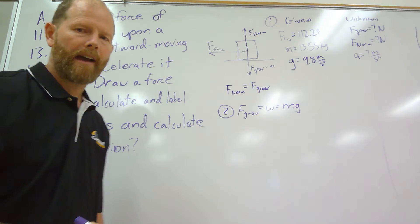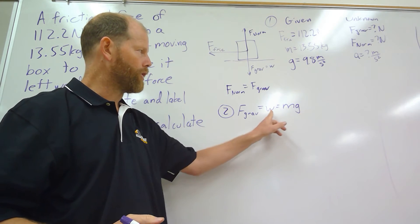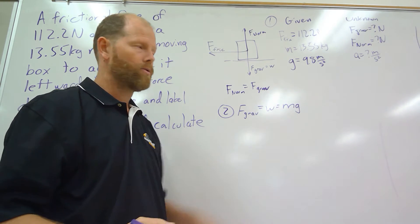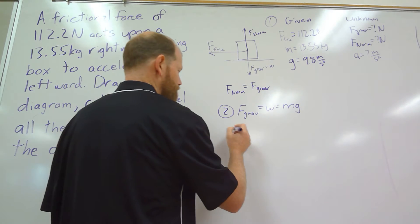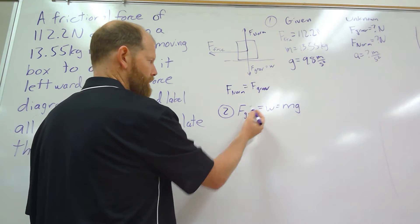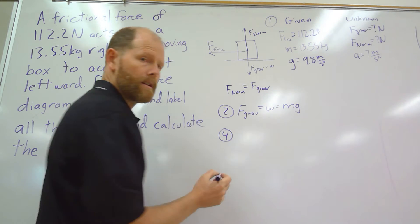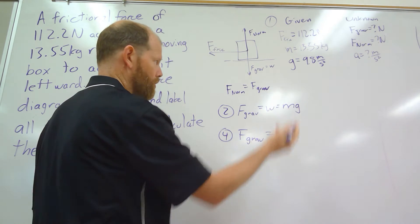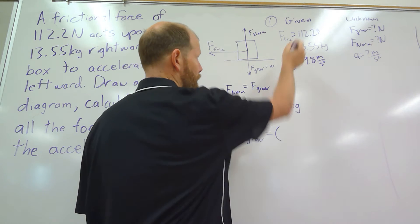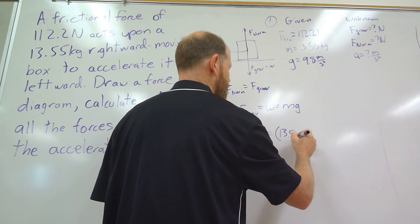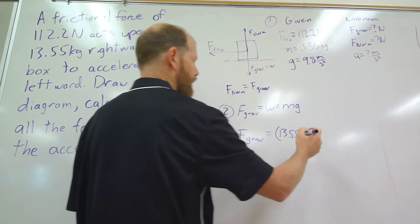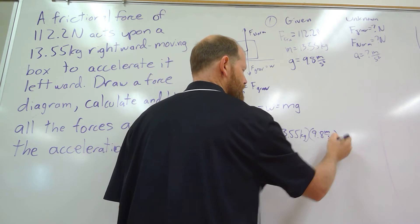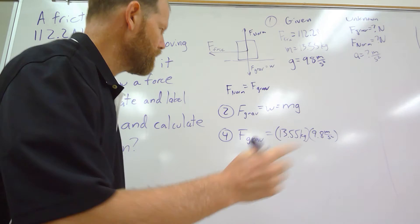F gravity, which you could also say is equal to the weight, is equal to the mass times the acceleration of gravity. Remember, if we let something fall under only the force of gravity, it would accelerate at that rate, so we can use Newton's second law with just the force of gravity. Because we're solving for the force of gravity, we don't need to rearrange it. Step four, plug into that and leave out the W. You could use W instead of force of gravity. Our mass is 13.55 kilograms and the acceleration caused by gravity is 9.8 meters per second squared.